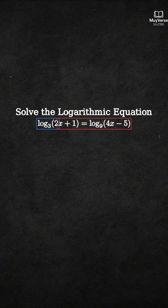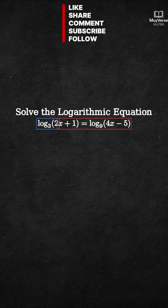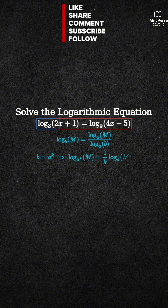Step 1: Make the bases match. We will rewrite base 9 in terms of base 3. Because 9 equals 3 squared, we use the change of base idea: log base b of m equals log base a of m divided by log base a of b, or when b equals a to the power k, log base a-to-the-k of m equals 1 over k times log base a of m.